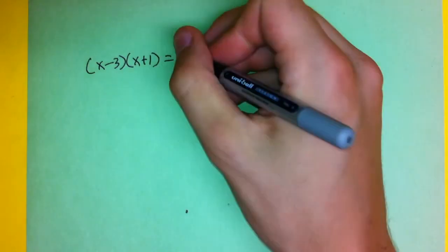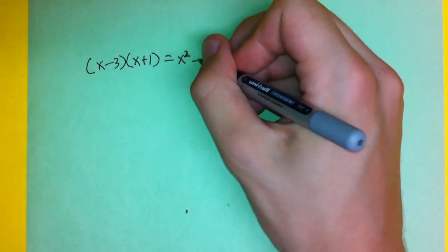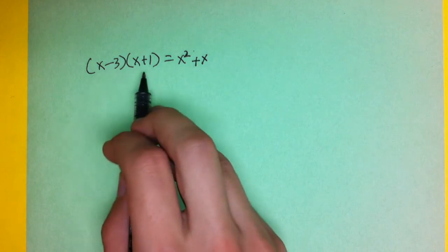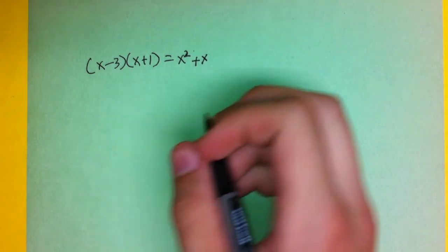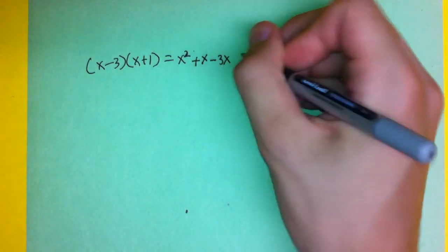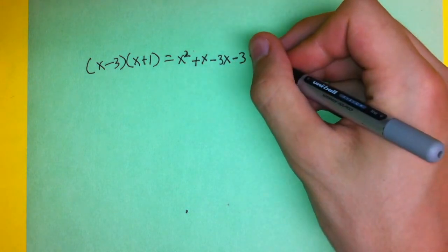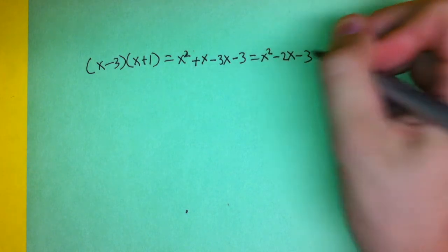So 4x minus 3 times x plus 1: x times x is x squared, then x times 1 is a positive x. Now the first term has been multiplied with both terms in the second expression, so we move on to the second term, negative 3. Negative 3 times x is minus 3x, and negative 3 times 1 is negative 3. That simplifies to x squared minus 2x minus 3.